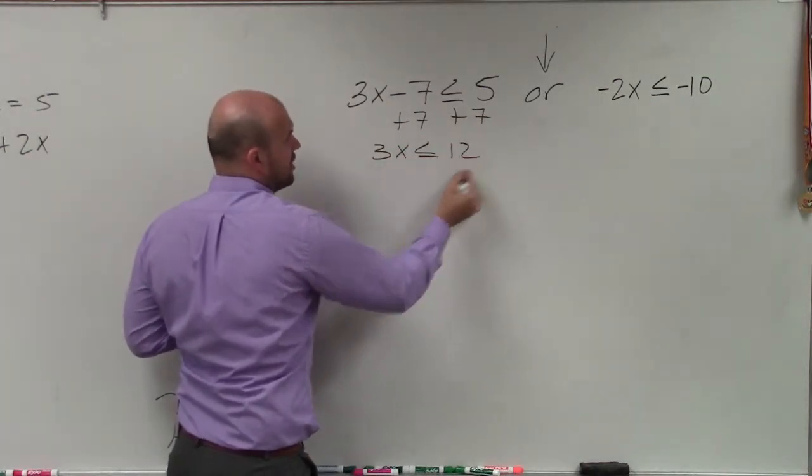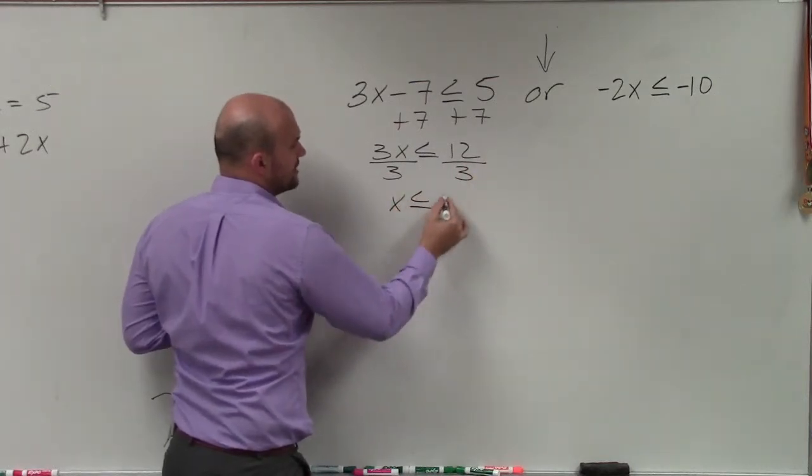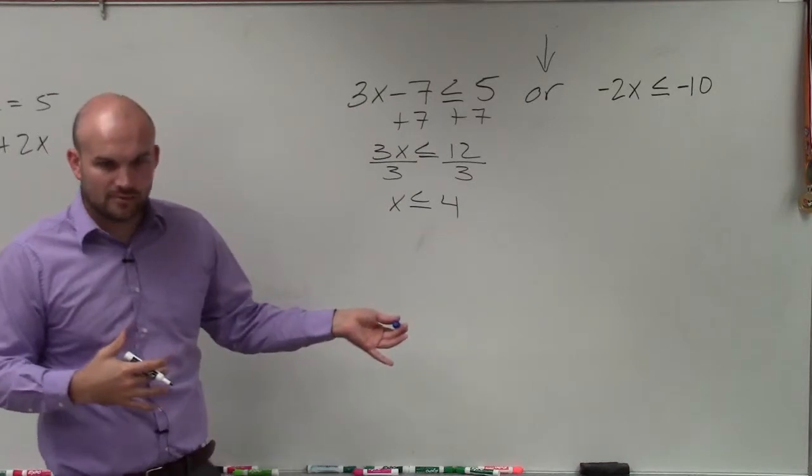3x is less than or equal to 12. Then I divide by 3. And x is less than or equal to a positive 4. That's kind of like going back to one variable inequalities.